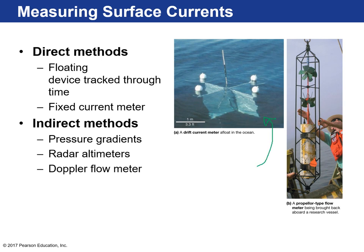Here's a drift current meter — it floats along the ocean surface. Others are fixed, perhaps anchored to the ocean floor, or controlled to hover at certain depths. This is a propeller-type flow meter. Indirect methods are done essentially through meteorology — understanding the different pressure gradients that exist. High and low pressure systems in the atmosphere over the ocean can help determine the direction of ocean currents.